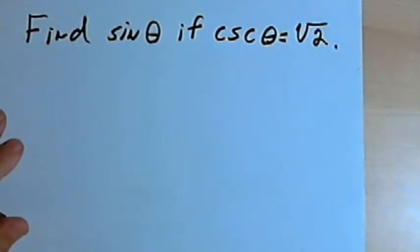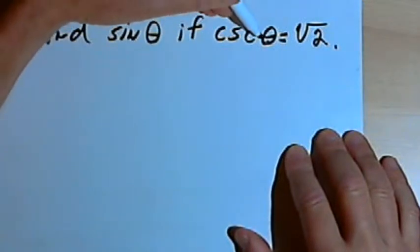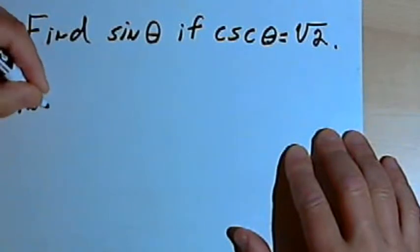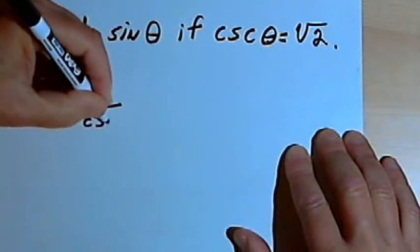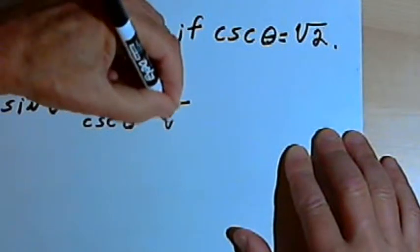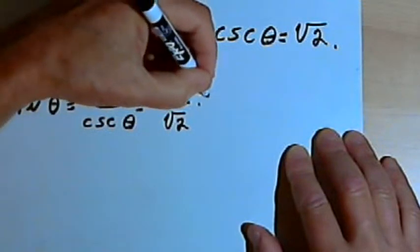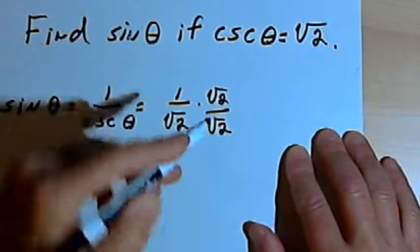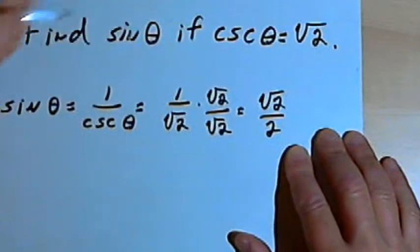A typical problem you get when doing these is: find the sine of theta if the cosecant of theta equals the square root of 2. The sine of theta has an identity which is 1 over the cosecant of theta. So I'm just going to plug in the given cosecant and get 1 over the square root of 2. Then to get rid of the radical in the denominator, I multiply by the square root of 2 over the square root of 2, and my answer is the square root of 2 over 2.